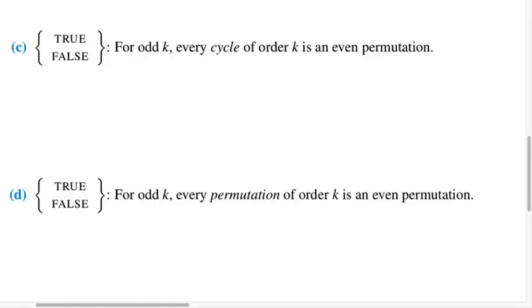So there's a difference between these two questions. The first question is, can you tell me whether every cycle of order k is an even permutation? And the second question is, can you tell me if every permutation of order k is an even permutation?